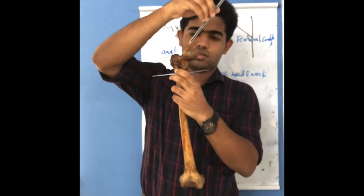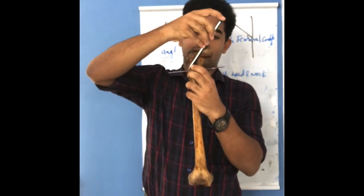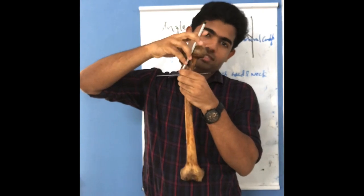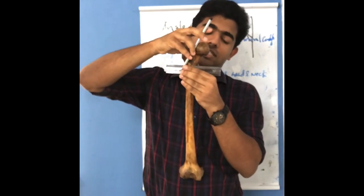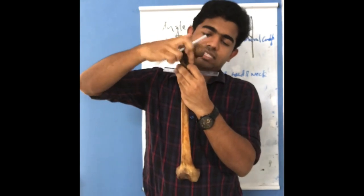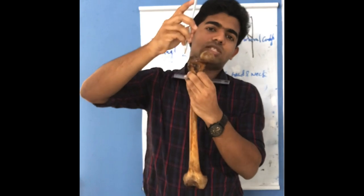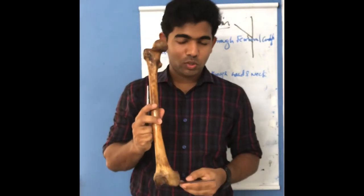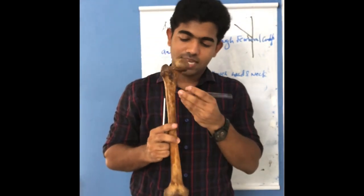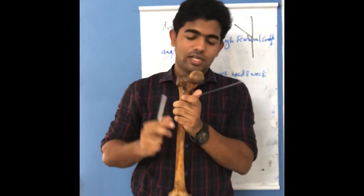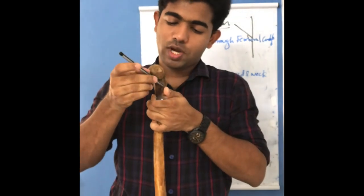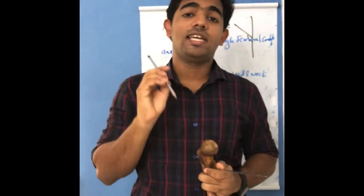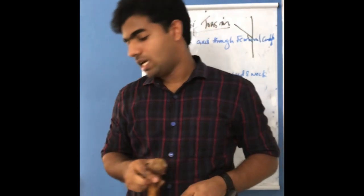Now imagine this is the axis passing through the head and neck - this pencil - and let us show it like this. You can see that there is an angle made here. That angle existing here is known as the angle of torsion of the femur. So what we did is we just dragged the condyle axis upwards and we got this angle of angulation - that angle is known as the angle of torsion of the femur.